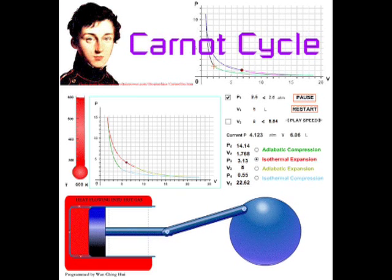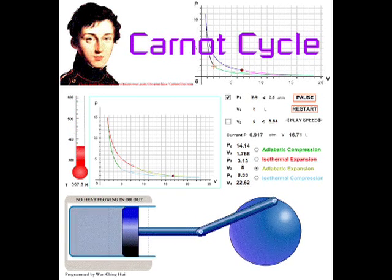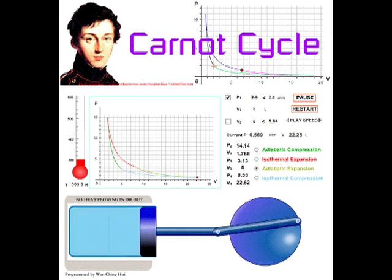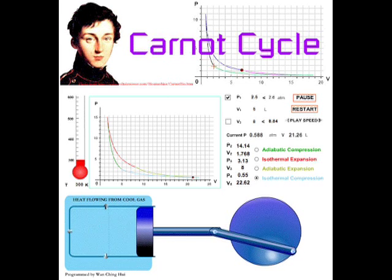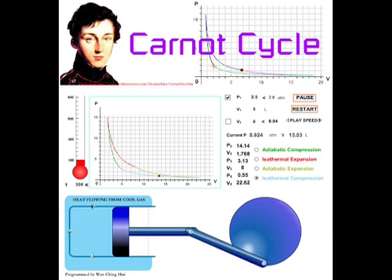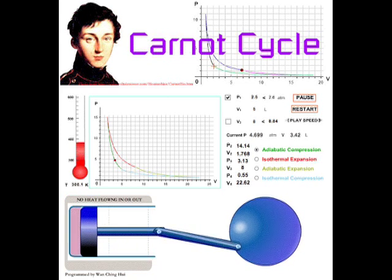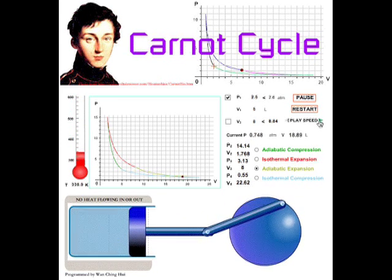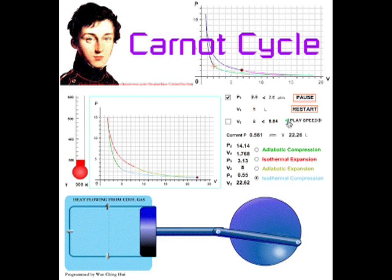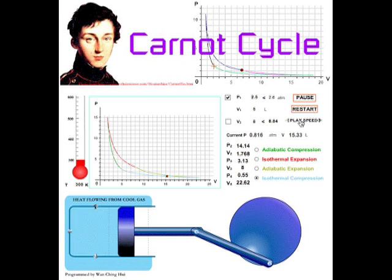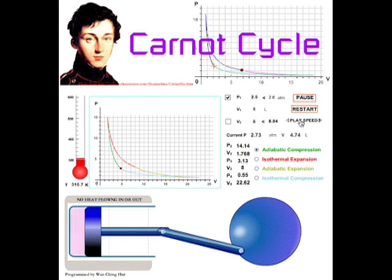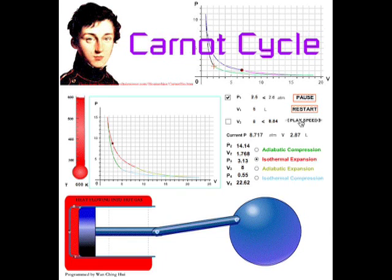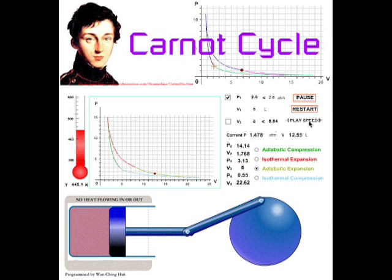In the process from B to C, heat gain or loss is zero, pressure is going down, and volume is going up. From C to D, temperature remains constant while pressure increases and volume decreases. From D to A, the phase which completes the cycle, heat is zero, pressure increases, and volume decreases.